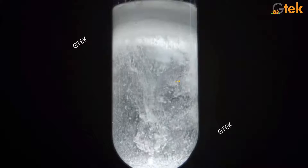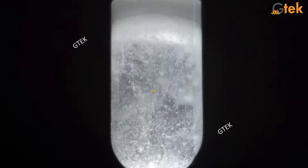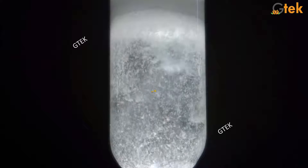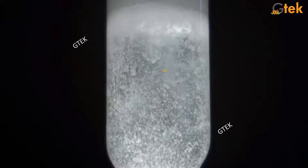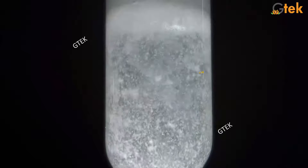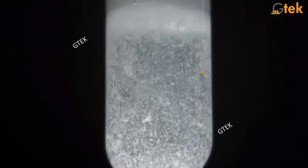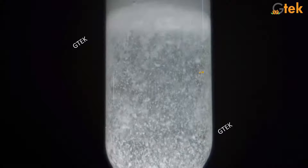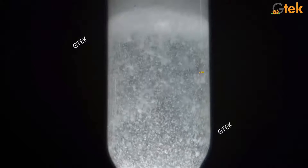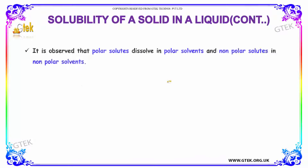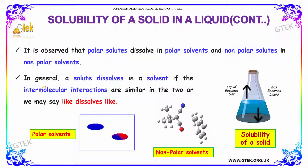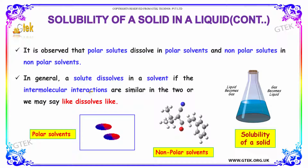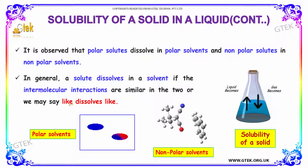This is how the entire solvent and solute started reacting to form the polar solution. The solute which is able to react effectively is called a polar solute, and the solution formed is called a polar solution. It is observed that polar solutes dissolve in polar solvents and non-polar solutes in non-polar solvents. In general, a solute dissolves in a solvent if the intermolecular interactions are similar in the two — or simply, like dissolves like.